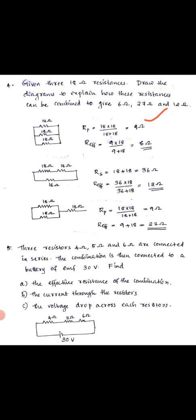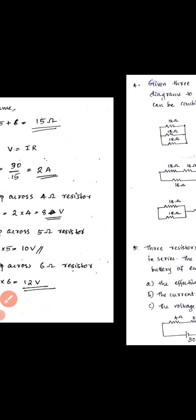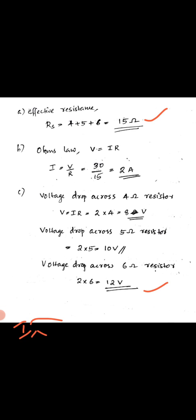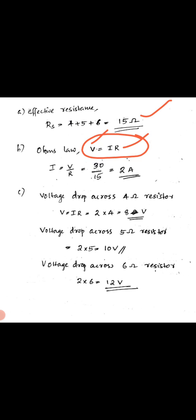When the battery is connected, current flows through the circuit. Using Ohm's law: V = I into R, so I = V divided by R. The EMF is 30 volts and the effective resistance is 15 ohm. Therefore I = 30 divided by 15 = 2 ampere.